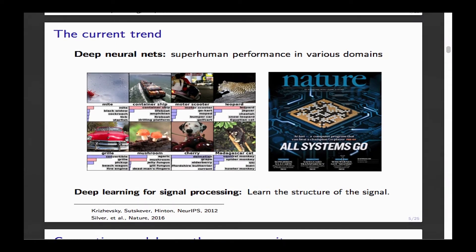The current trend: we have seen neural networks and they are very successful — at image classification, speech recognition, playing games, and also for signal processing. The idea is that instead of just knowing what the structure of your signal is, you learn what the structure is and then exploit it. So you use deep learning for learning the structure of your data.